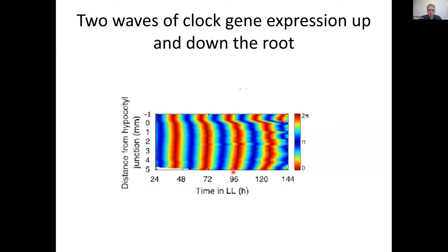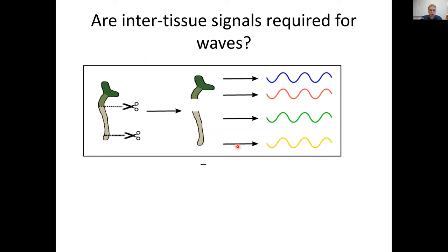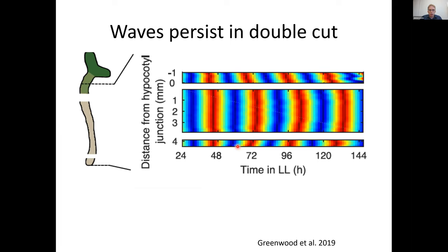These differences in clock timing, when you watch movies using sub-tissue level luciferase imaging of a clock gene, reveal spatial waves of clock gene expression. You can see a wave going from the root tip upwards, and also a wave coming from the hypocotyl down into the root. A kymograph shows that with each cycle — because the root is running slower — the wave going down into the root gets later and later, while the root tip is peaking before the rest of the root.